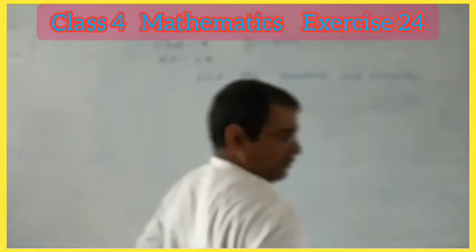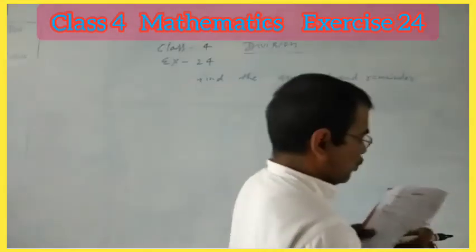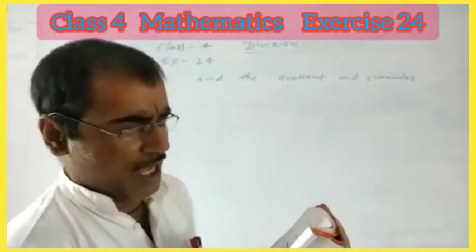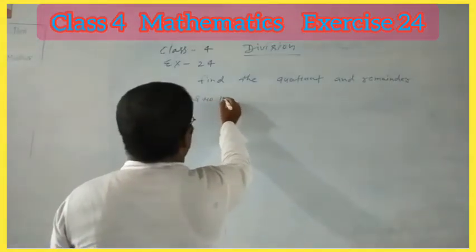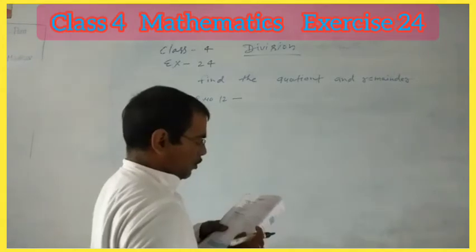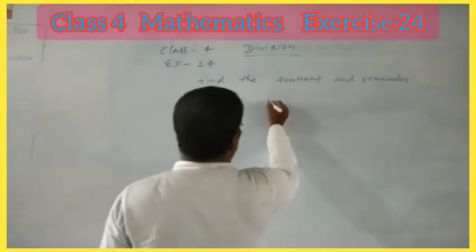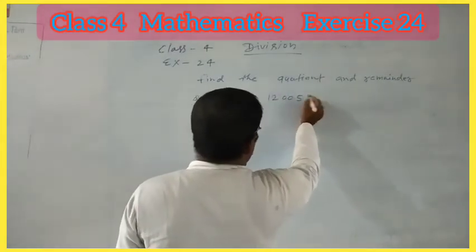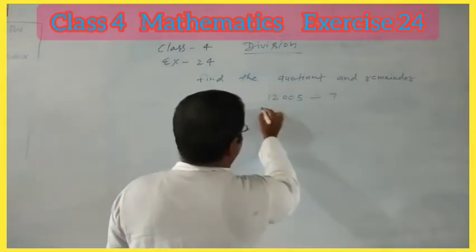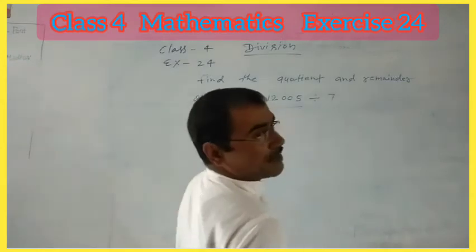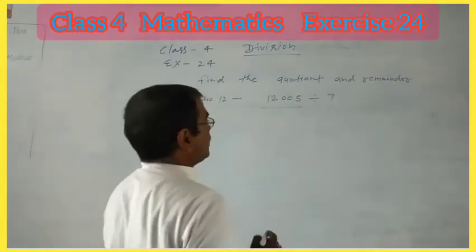Another question I will teach you: Question number 12, which is 12,005 divided by 7. Here, 12,005 is the dividend and 7 is the divisor.